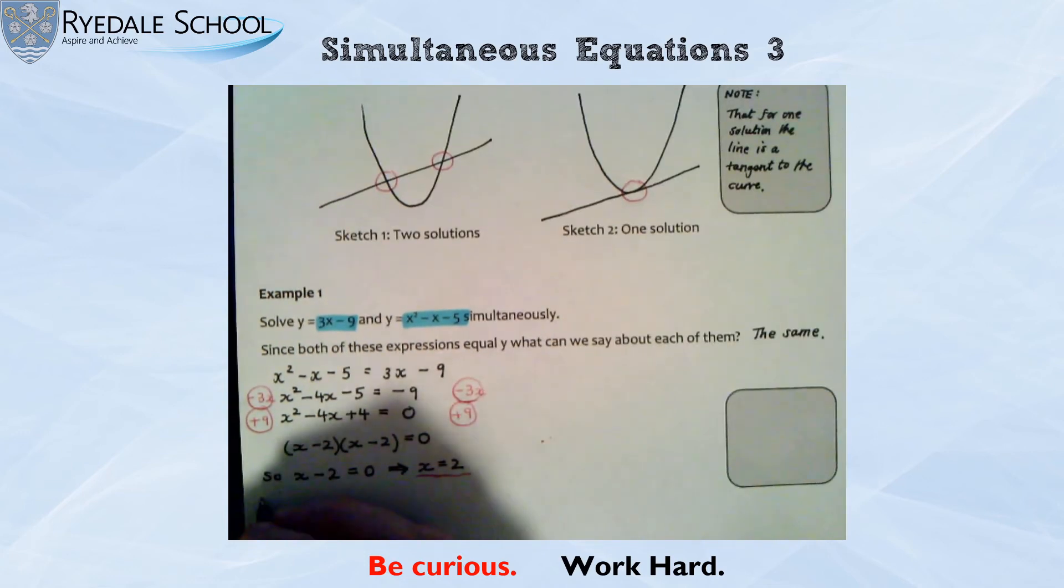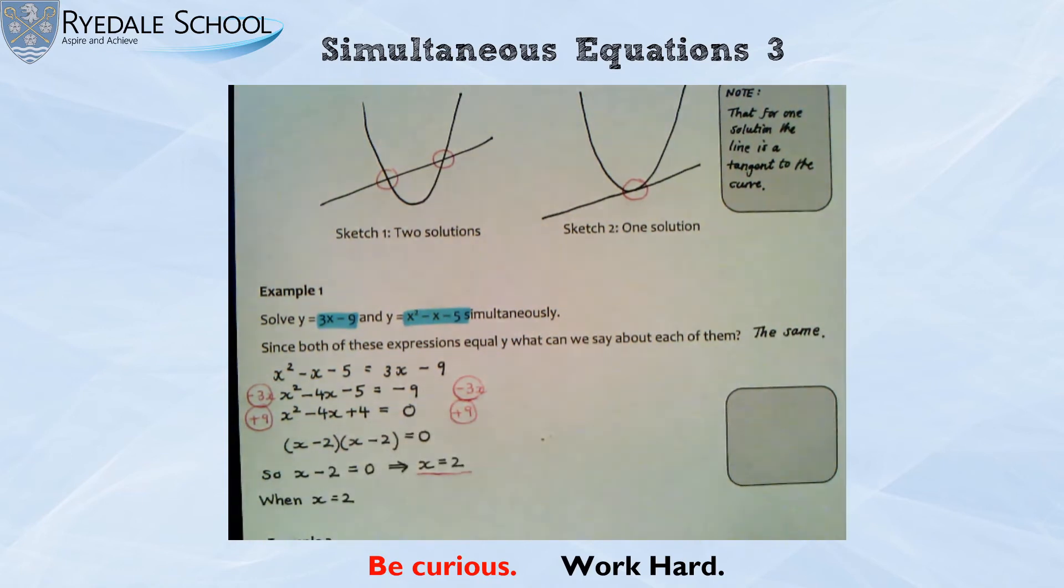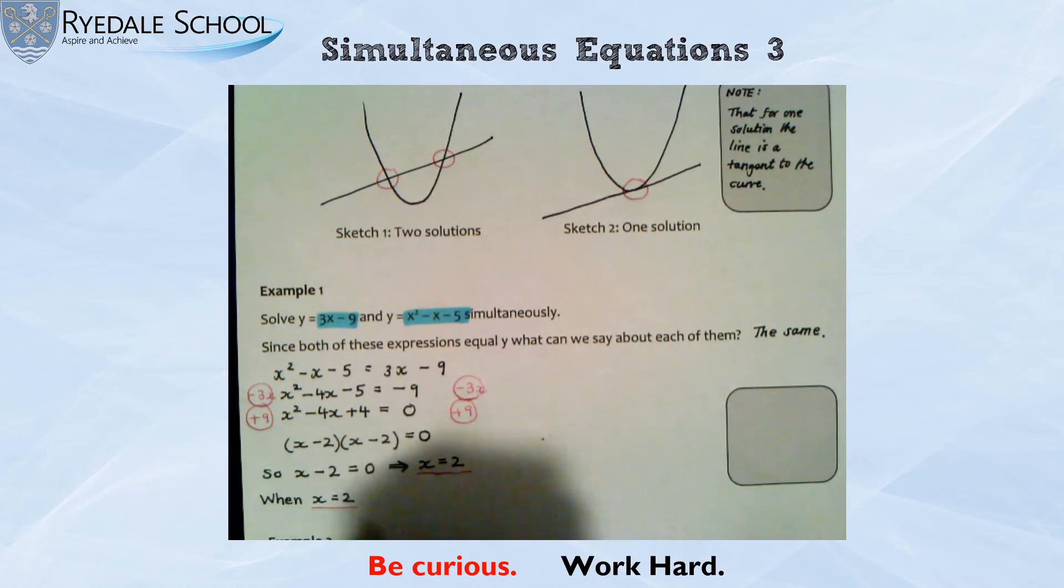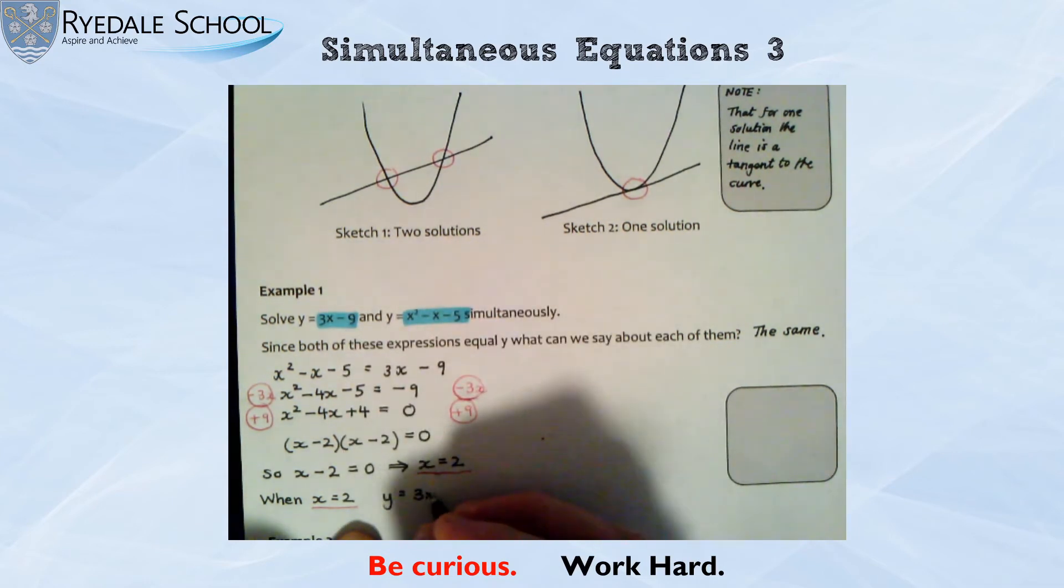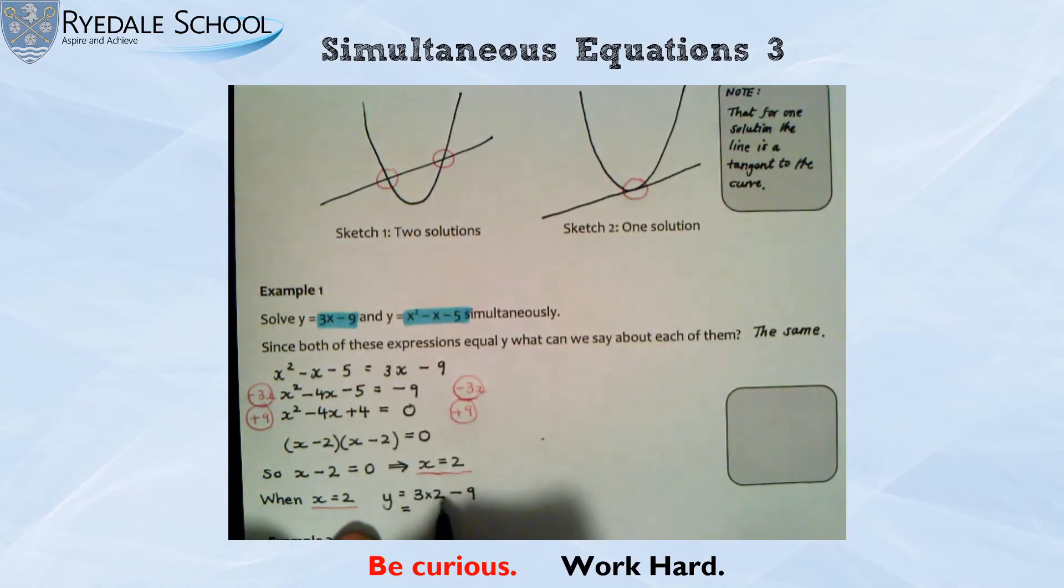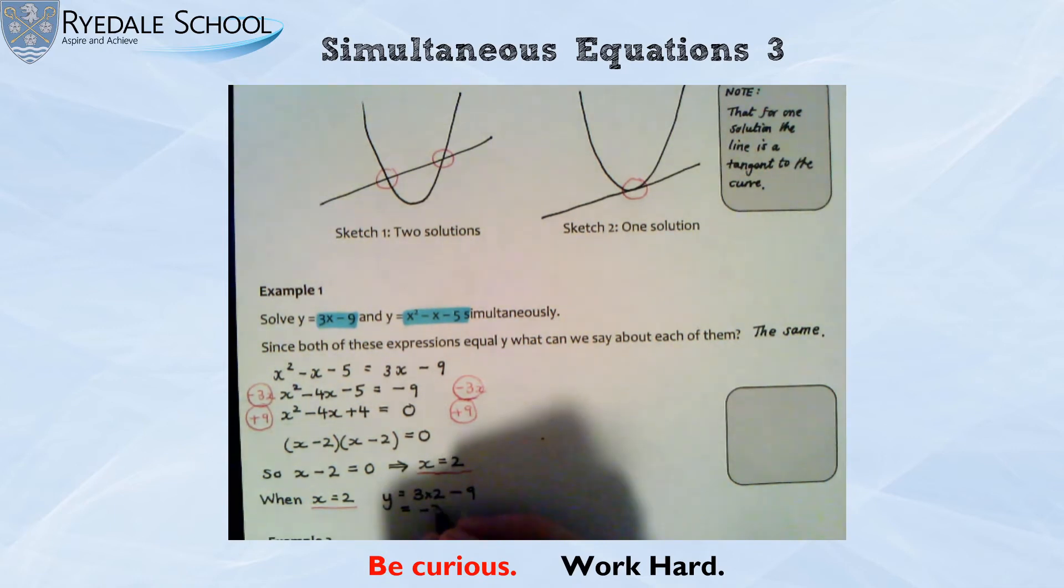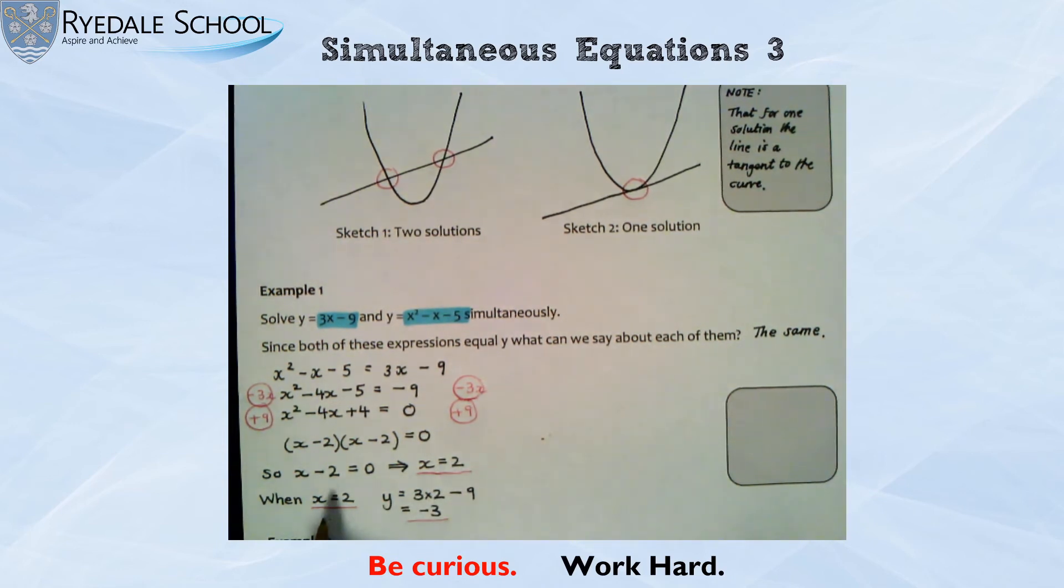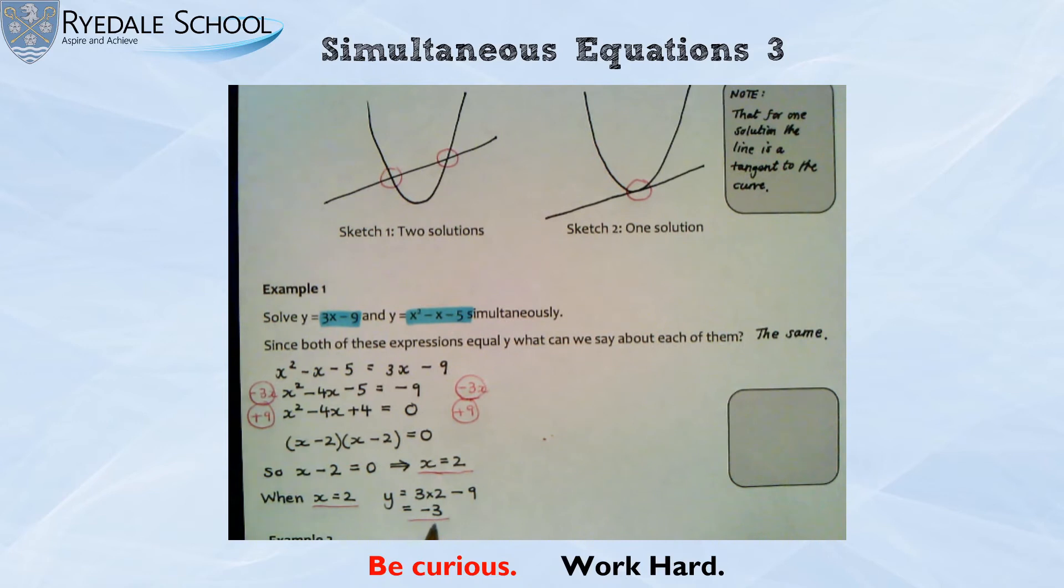So I'm going to do when x equals 2. And I'm going to substitute into there. So I know that y is 3 lots of my x. So 3 times 2 take away 9. So 3 times 2 is 6. Take away 9 is negative 3. So I've got the one solution. When x is 2, y is negative 3.